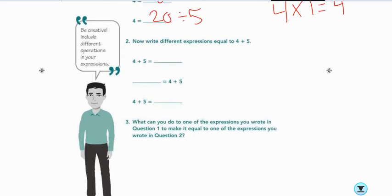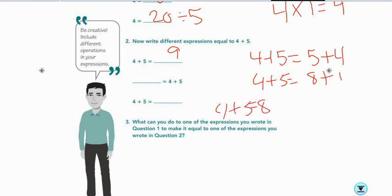Number 2, now write different expressions equal to 4 plus 5. Well, I know that 4 plus 5 is 9. I could also say that 4 plus 5 equals 5 plus 4. I could say that 4 plus 5 equals 8 plus 1. I could say that 4 plus 5 equals 8 minus 3 plus negative 1. I could say that 4 plus 5 equals 90 divided by 10. And I could say that 4 plus 5 equals 3 times 3.